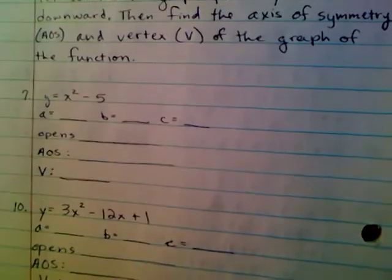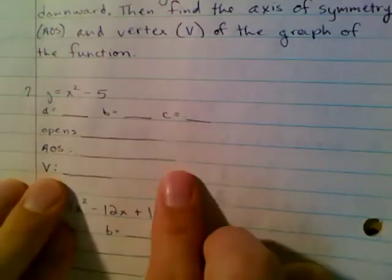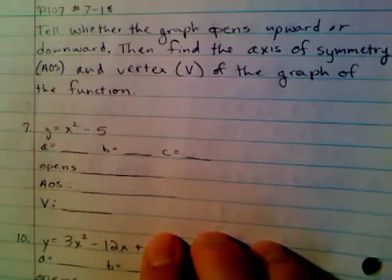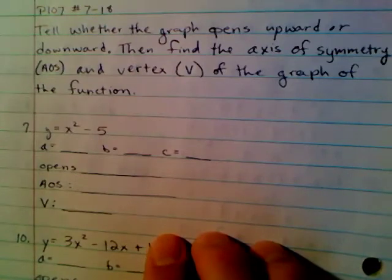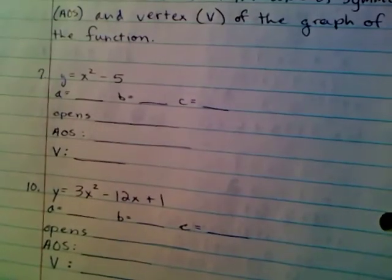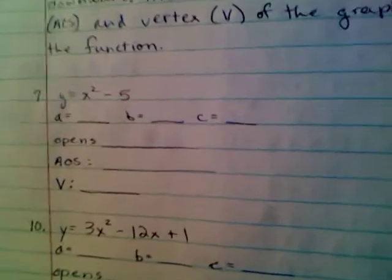So when you're given the question, it doesn't actually give you this whole template. It just says to tell me whether it opens up or down, then find the axis of symmetry, then find the vertex. But I have written in this template just so you guys will know what information you need in order to solve the question. So first it says, tell whether the graph opens upward or downward.